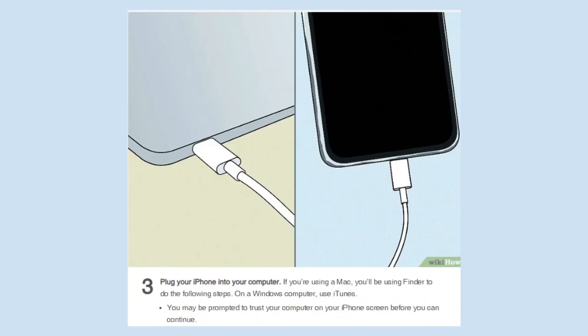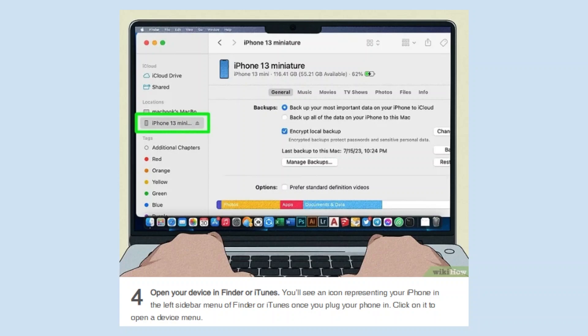If you're using a Mac, you'll be using Finder to do the following steps. On a Windows computer, use iTunes. You may be prompted to trust your computer on your iPhone screen before you can continue. You'll see an icon representing your iPhone in the left sidebar menu of Finder or iTunes once you plug your phone in. Click on it to open the device menu.